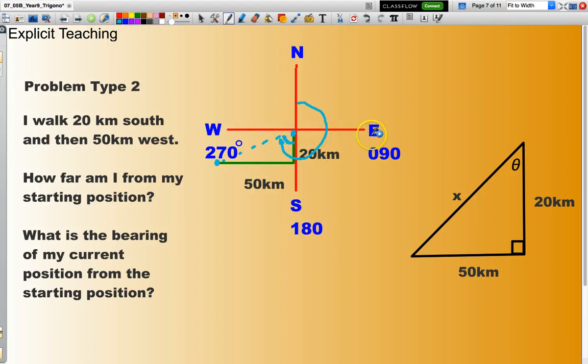So, again, just read the question. I walked so far south, 20 kilometres and 50 kilometres to the west. Right. And how far am I from my starting? So, that's that distance there. So, let's look at the maths that we would use to solve that problem.